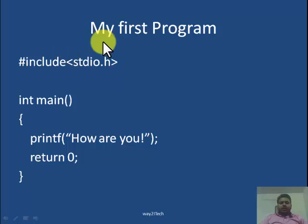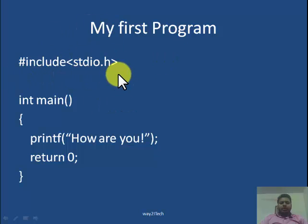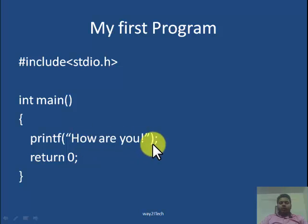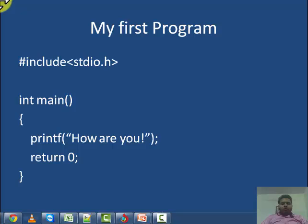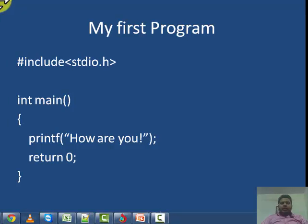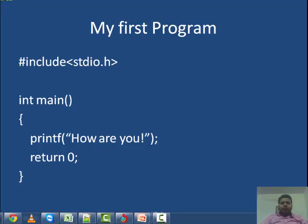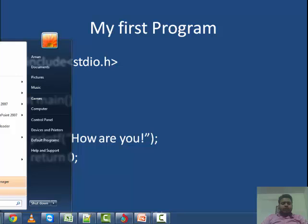This is our first C program. The program will look like this: my first C program — hash include, int main, printf 'how are you', return 0. We will be writing this using FC++ for writing and running the programs, so I will run FC++.